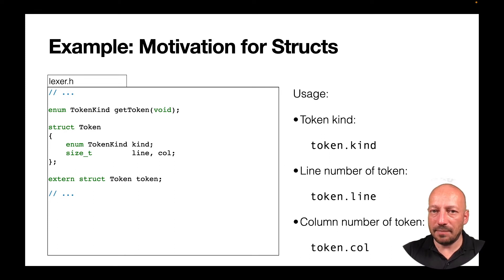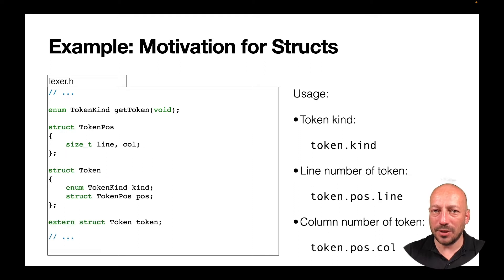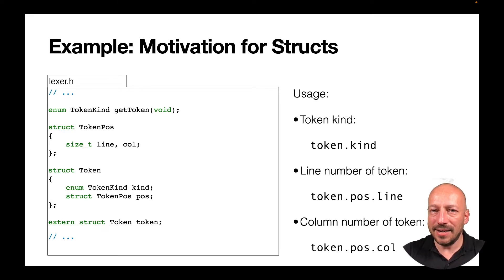We can go even one step further. The position of a token consists of its line number and column, so we can group those together by declaring another struct — struct token_pos — with two members. Then we change the declaration of struct token so it has two members: one for the token kind and one for the position. We then access the line number with token.pos.line, giving the variable more structure using a language feature.